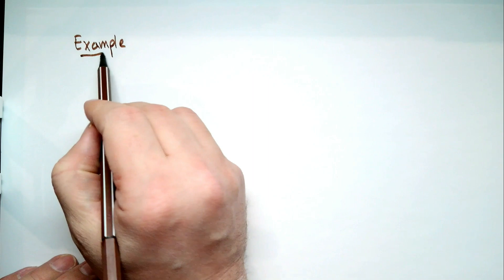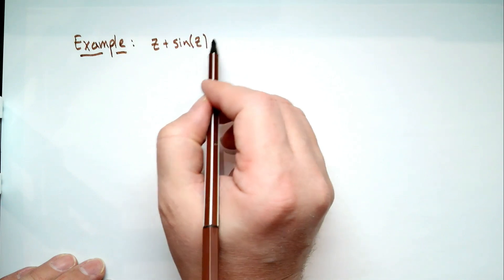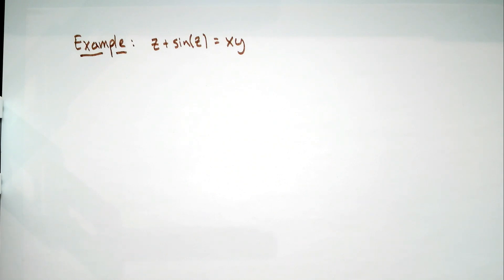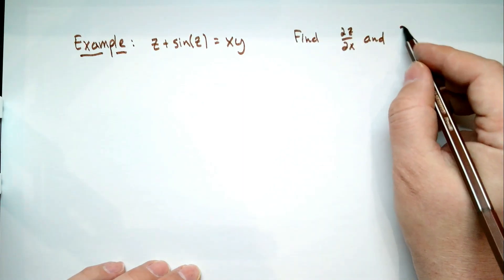We'll just make up an example here — nothing very sophisticated. Z plus sine of Z equals X times Y. This is an implicit relationship from the perspective of Z. If you tell me what X and Y are, that gives me strong restrictions on what Z can be. Z depends on X and Y, and it's uniquely determined by them, but you won't find an explicit function. So the goal is to find partial Z partial X and partial Z partial Y.